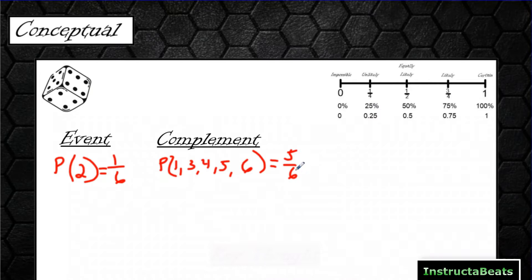So the way we actually write that is, if rolling a 2 would be A, the probability of A, instead of writing 1, 3, 4, 5, and 6, we could write it with an apostrophe. Now, that's one of a couple different ways you could write it, but that's how we're going to write it. And that means the complement of A. So if A was 1/6, the complement would be 5/6.